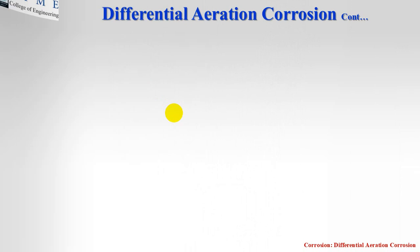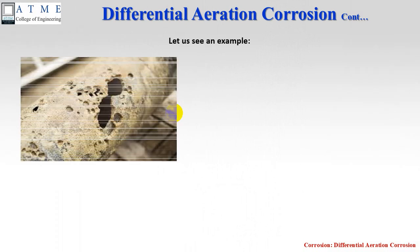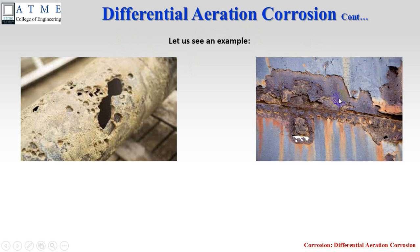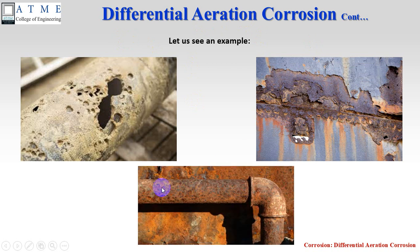Due to pitting corrosion, a metallic pipe can develop holes. This is caused by differential aeration corrosion, specifically pitting corrosion. Another example shows a pipe where the whole surface is corroded due to pitting.